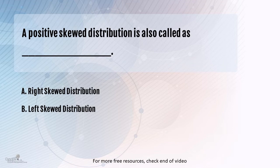So what is a positive skewed distribution? A positive skewed distribution has its tail on the positive axis. If the tail is on the positive axis, we call that a right skewed distribution.